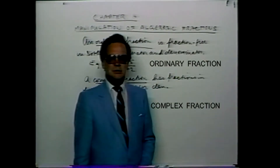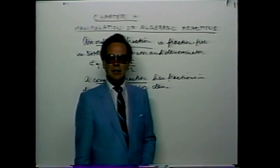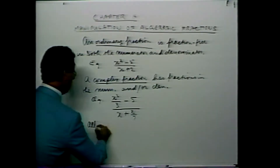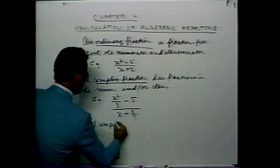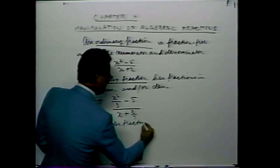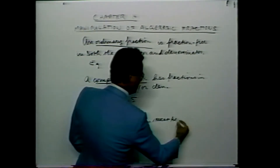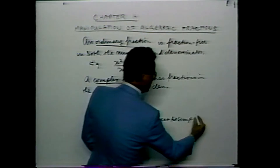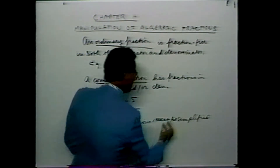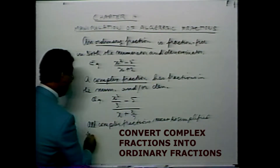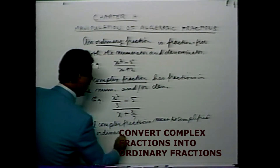I'm going to use the short form for numerator: NUM, and or denominator: DEN. For example, x squared over 3, minus 5 over x, plus 2 over 7. All complex fractions are expected to be simplified to ordinary ones.